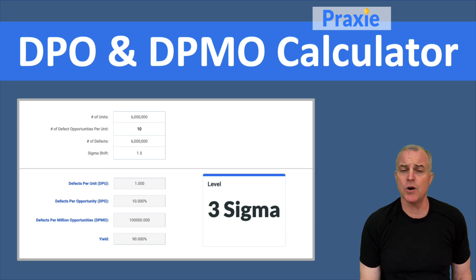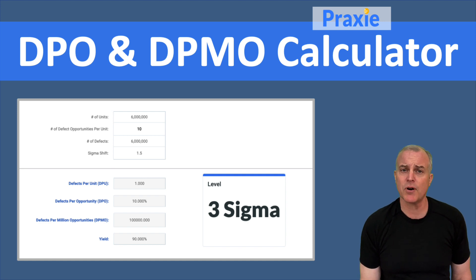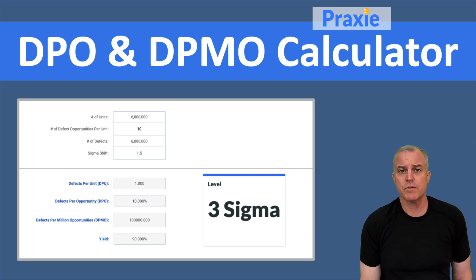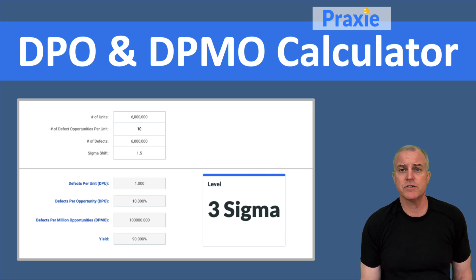In Six Sigma, the DPO or DPMO calculator refers to a way to calculate the defects per opportunity or defects per million opportunities, so that you can determine whether you're really at a high quality level in terms of your manufacturing process. You're able to enter in a number of different variables, and as you do that, you can start to calculate your defects per opportunity rate.